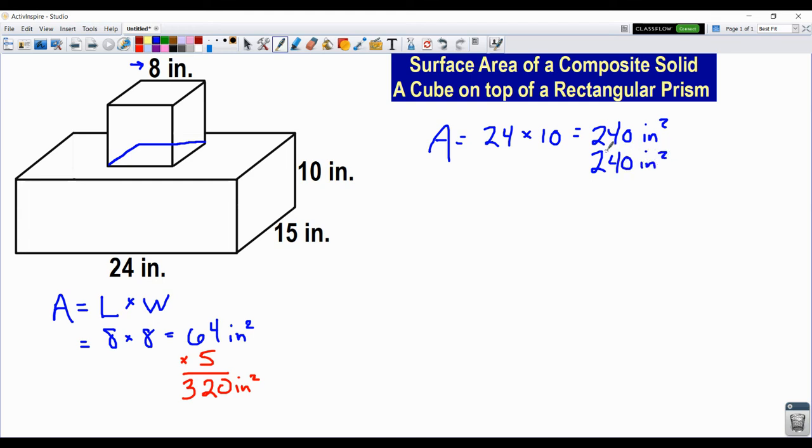So now we're done with the front and the back. Now let's take a look at the right side of our box. I can see it's 15 long and 10 high. So the area for the right side of our box is 15 times 10. And that's going to give us 150 square inches. And if the right side of the box is 150, then the left side is also 150 square inches.